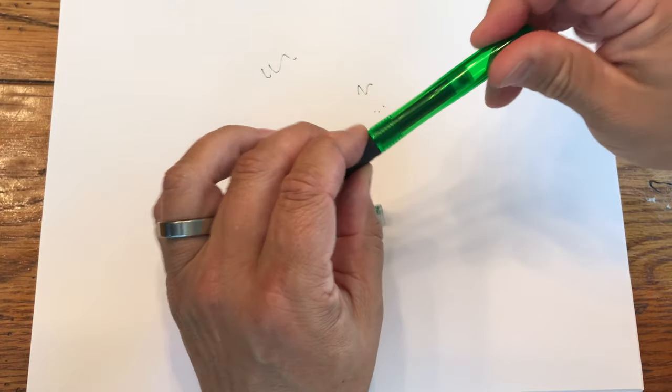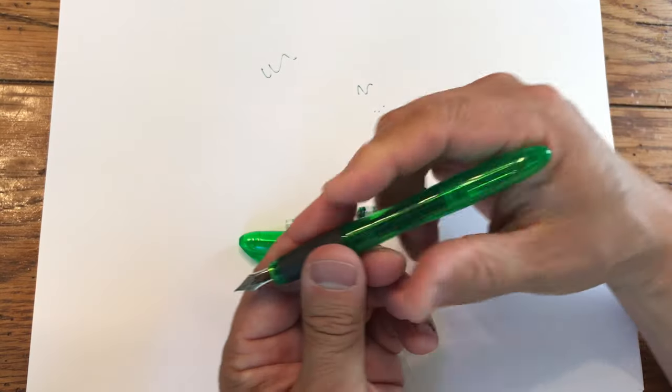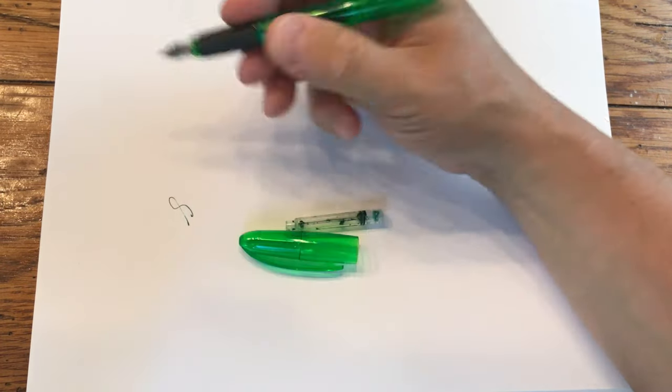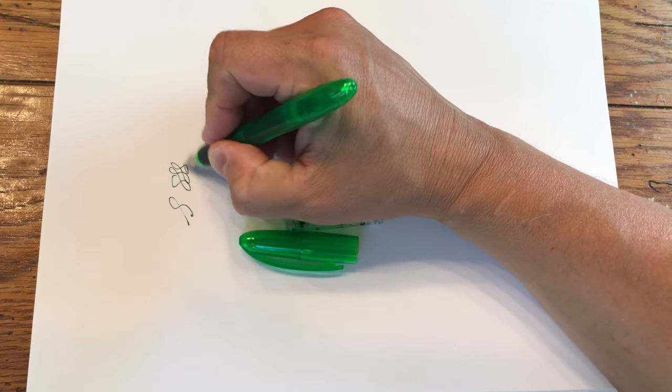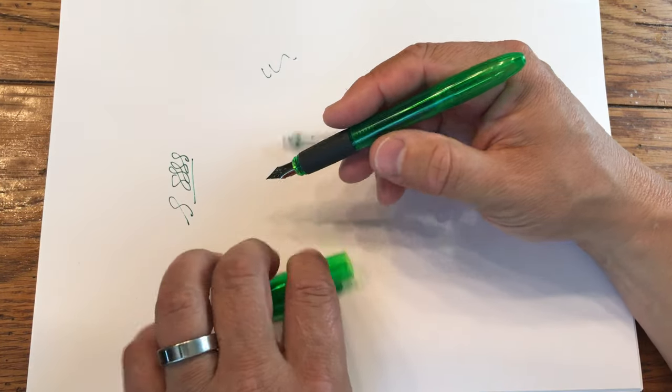That kind of ink refill system can happen like between classes, between meetings. Really, you can do it very quickly if you're writing and you run out of ink and you happen to have one of these things in your pocket or in your journal. It's pretty easy to swap that out. Very good pen.